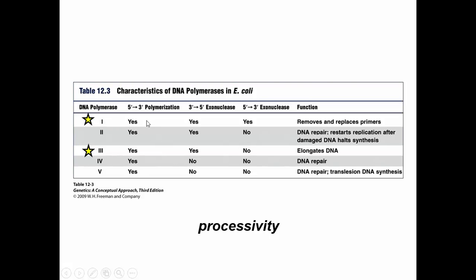DNA polymerase 1, on the other hand, has lower processivity, but it removes and replaces the RNA primers so you have a complete, intact DNA double helix. Some of these enzymes have three prime to five prime exonuclease activity; some have five prime to three prime exonuclease activity. Exo means outside; nuclease means to degrade DNA. So these enzymes can degrade at the end of the DNA strand if a mistake were made. This is a chart you want to know in full.